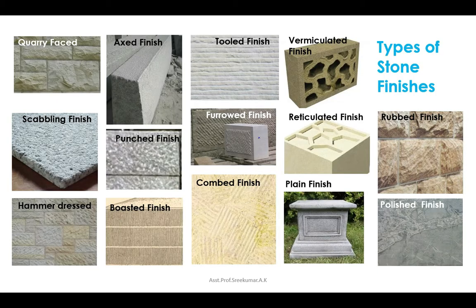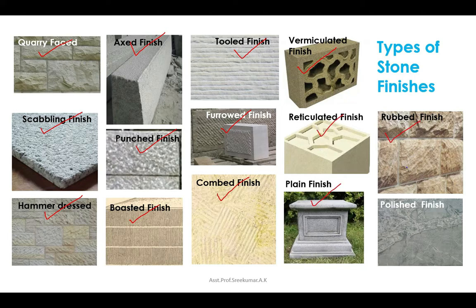There are 14 types of stone finishes. These are: quarry faced finish, scrambling finish, hammer dress, axe finish, punch finish, boasted finish, tool finish, furrowed finish, combed, vermiculated, reticulated, plain, rubbed, and polished.